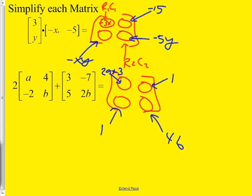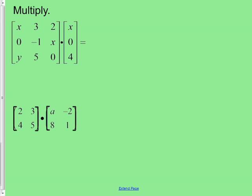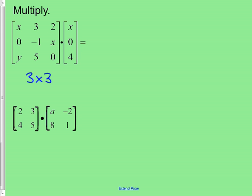Now let's move on to the harder kind. No chance of using a calculator here because there's a variable in it. First think about the dimensions: it's a 3-by-3 times a what-by-what, and then figure out what kind of answer you should have. Just do the top problem — if you can do that one, the bottom one is easier. Pause and give it a try.